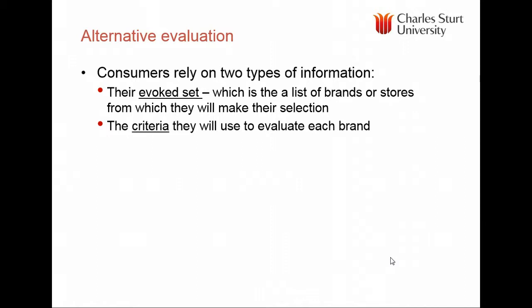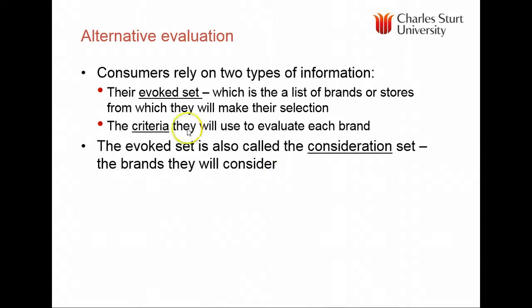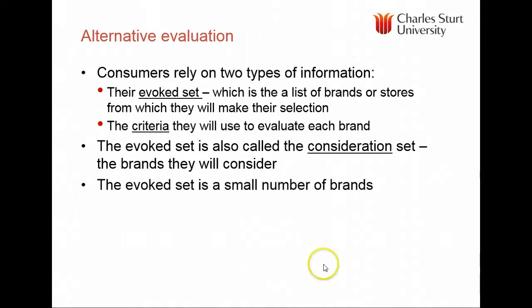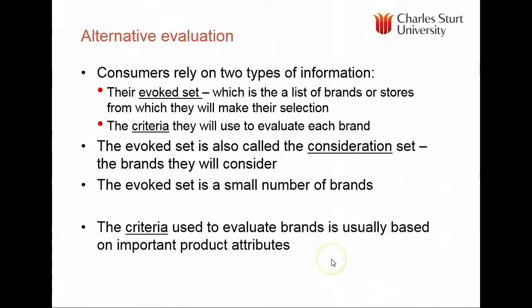Another way consumers evaluate alternatives is to look at brands themselves. There may be certain brands a consumer will only consider — we call this the evoked set. The criteria used to evaluate brands is also called the consideration set, and it's usually a small number — two or three brands. The criteria are typically based on important attributes, which may include the non-compensatory attributes used to construct the evoked set, such as safety.